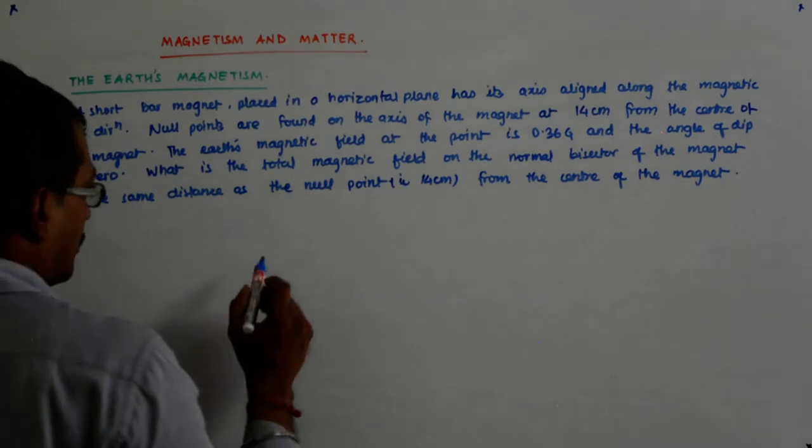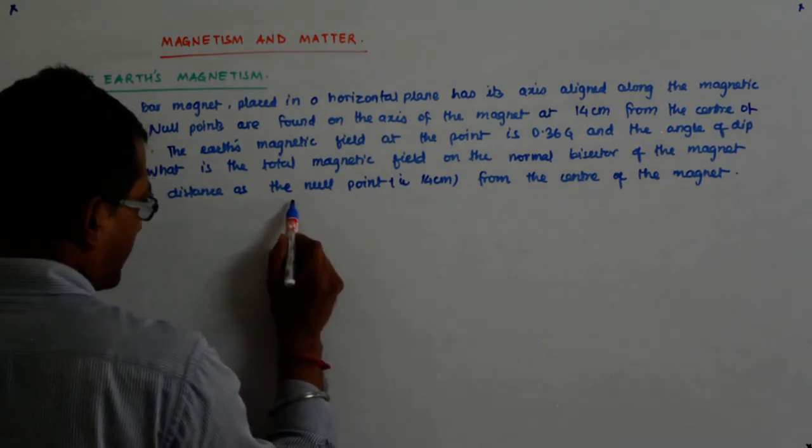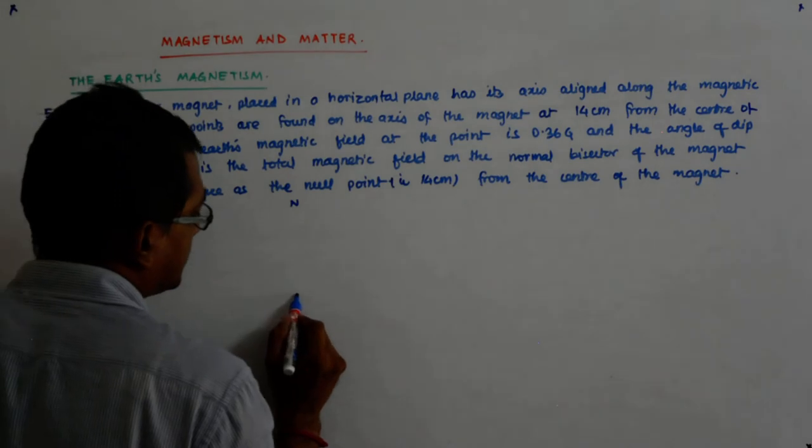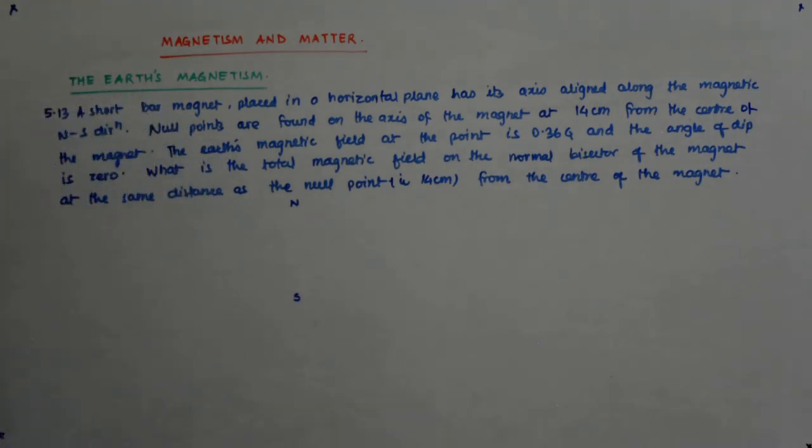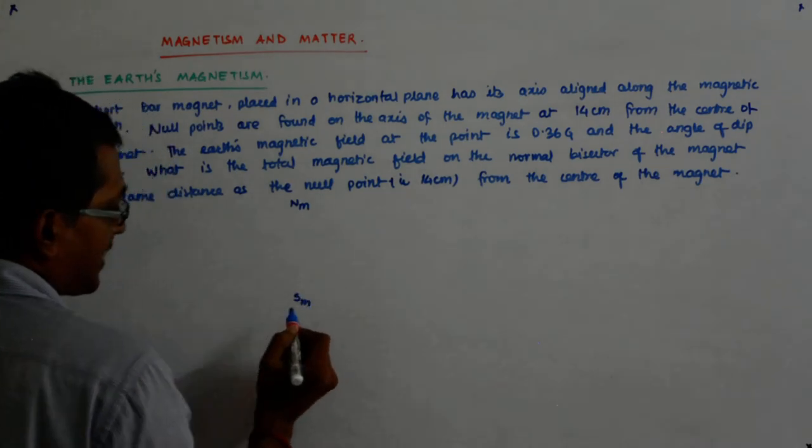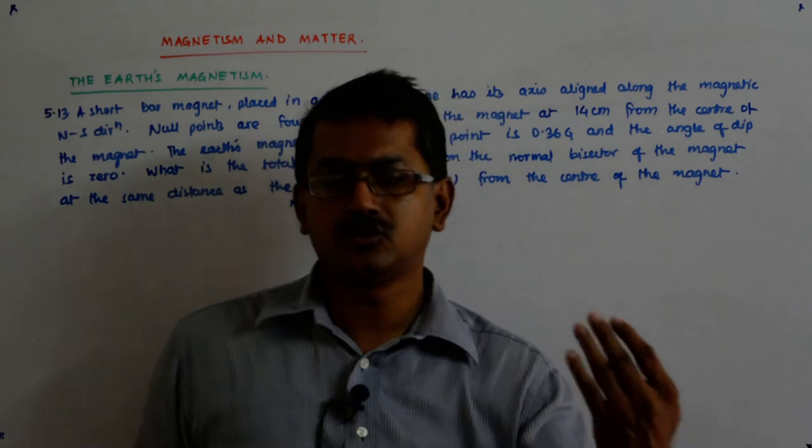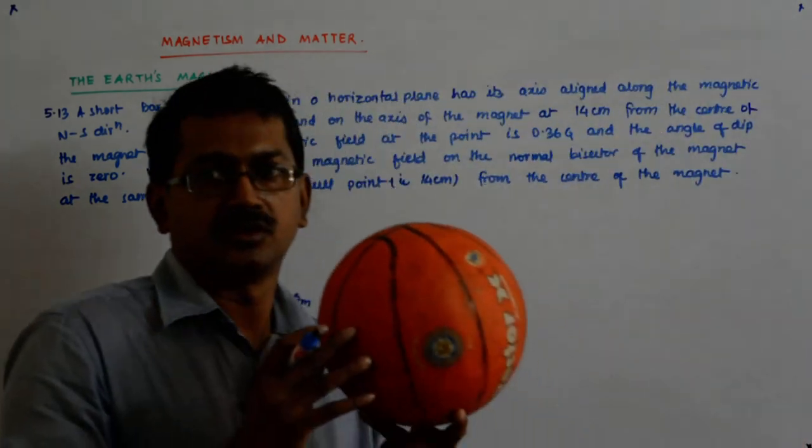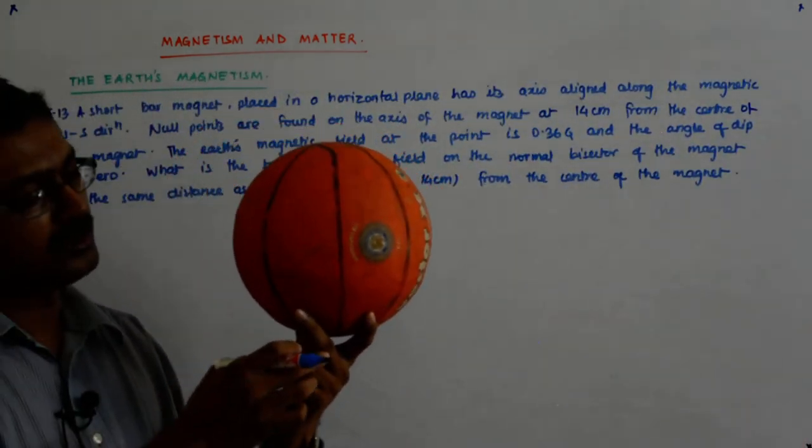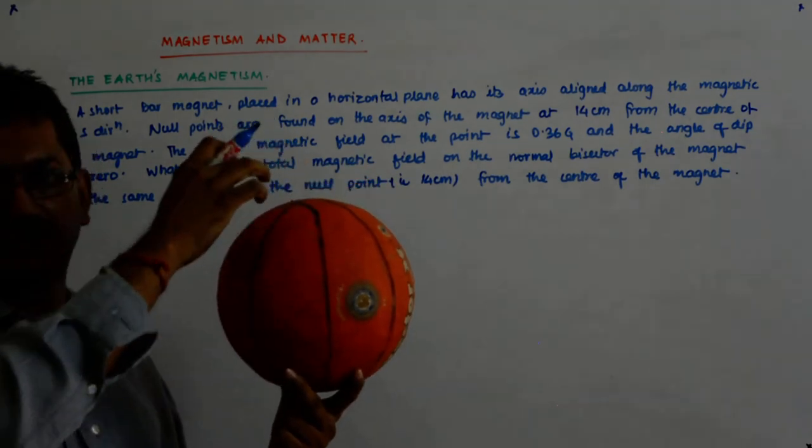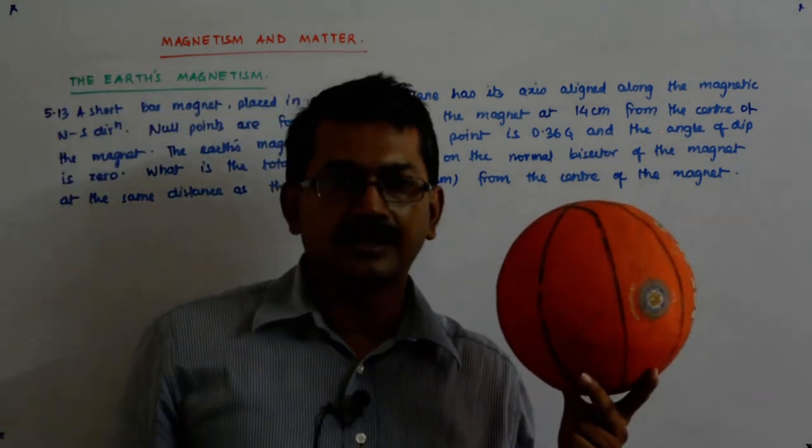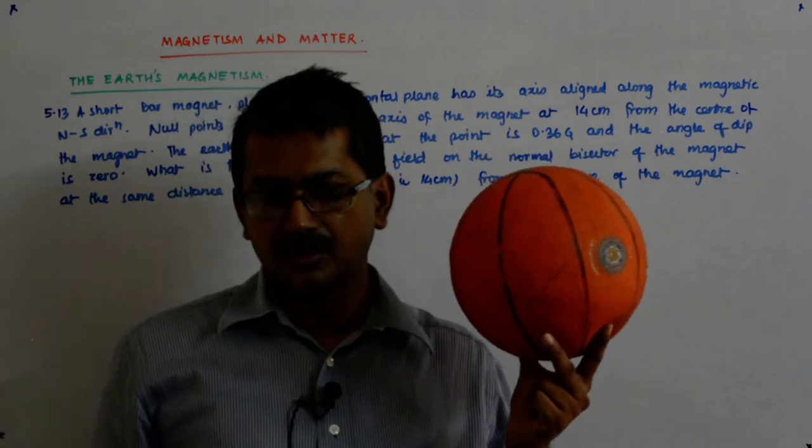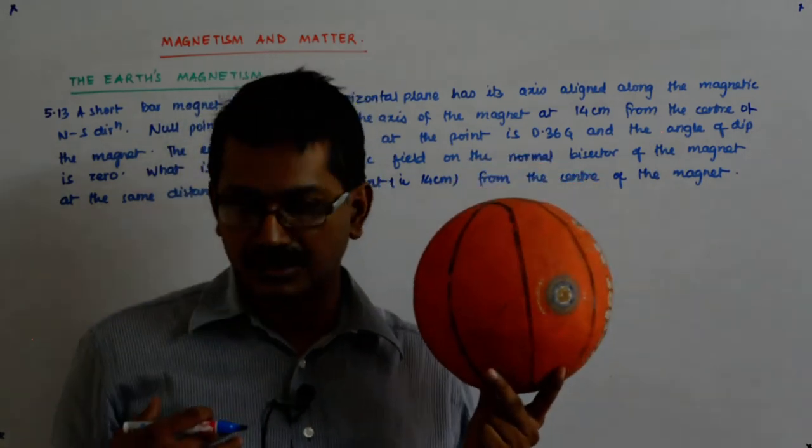So let us say this is my magnetic north-south direction. Magnetic north and magnetic south. I know that my fields actually originate from the magnetic south, as happens in this ball. This is the earth. So it originates from the magnetic south. Since we are outside the earth, I will see it coming from the magnetic south which is in the southern hemisphere towards the northern hemisphere.